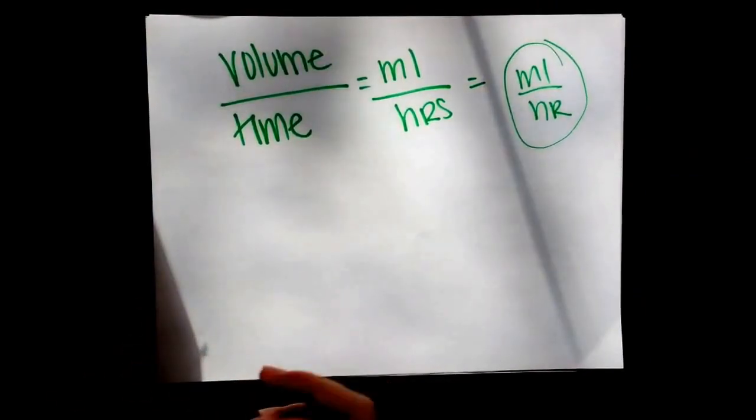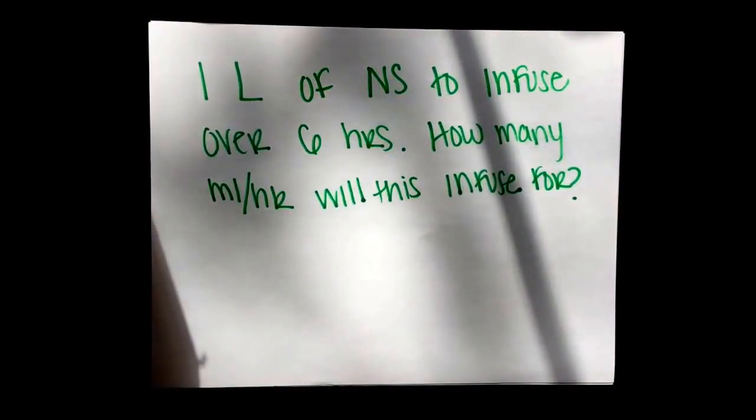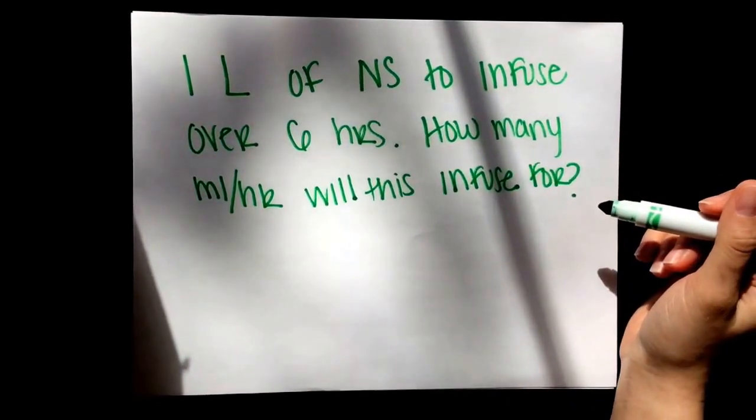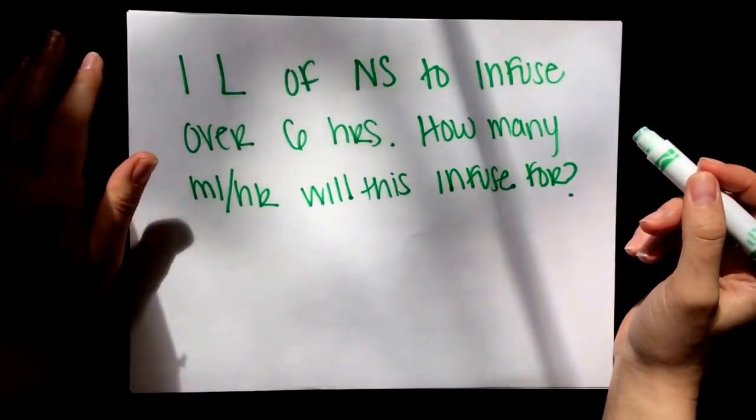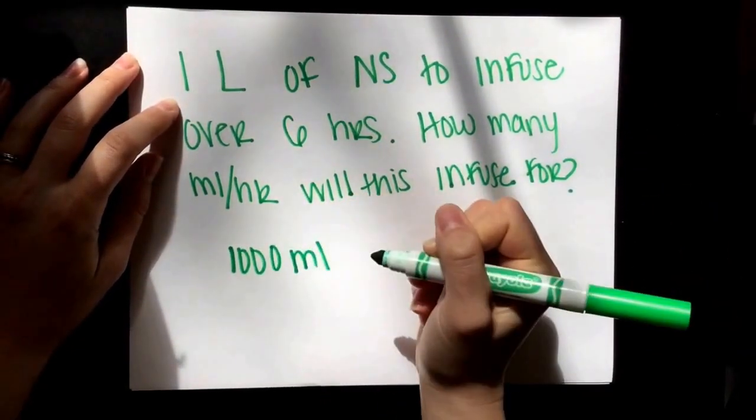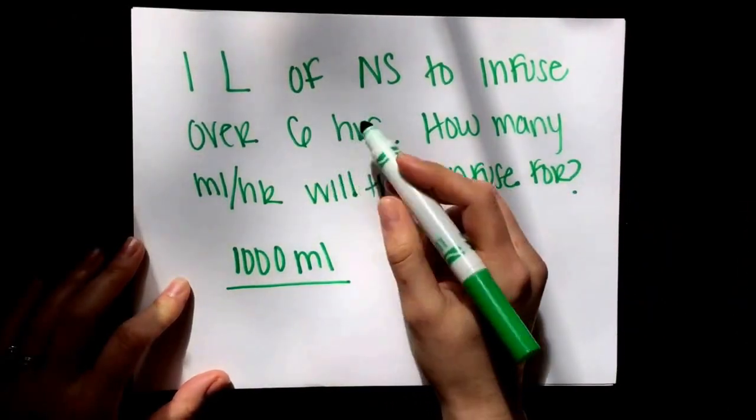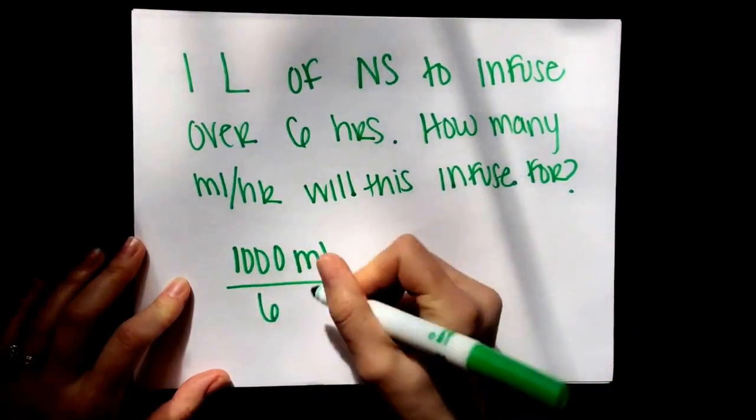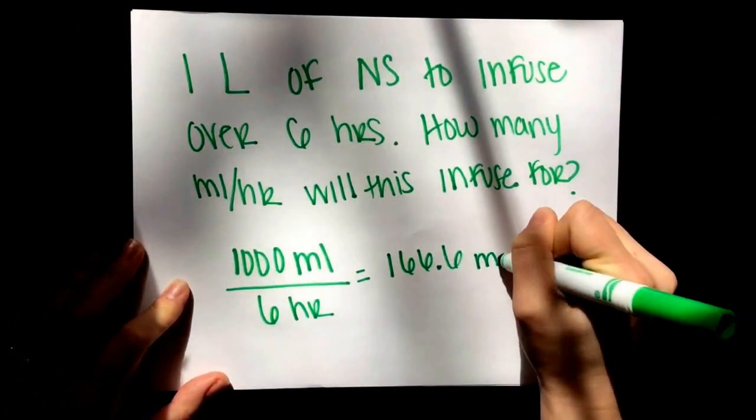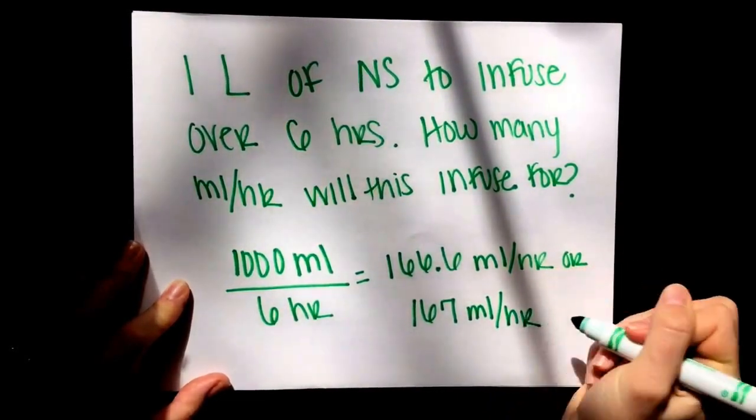Here is an example of an order that you may receive from a doctor. It reads one liter of normal saline to infuse over six hours. So the question is how many milliliters per hour will this infuse for? We know from basic metric conversion that one liter equals 1,000 milliliters, and that is our volume in the volume over time equation. We know it's going to infuse over six hours and that is our time.